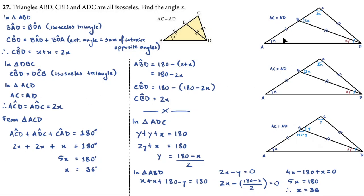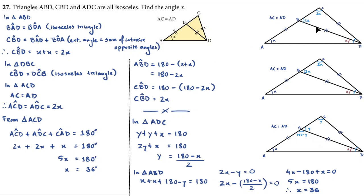In the bigger triangle ACD, AC is equal to AD, so angle ACD equals angle ADC. Since angle ACD is 2X, angle ADC is also 2X. The whole angle ADC is therefore 2X.